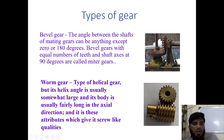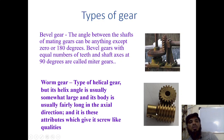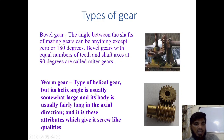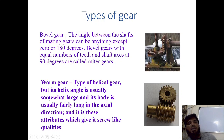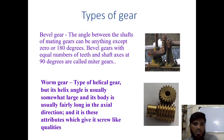The worm and worm wheel — the worm gear — has a worm meshing with a worm wheel. It is a type of helical gear but with a larger helix angle, and it is generally used for transmission from rotational to linear motion.